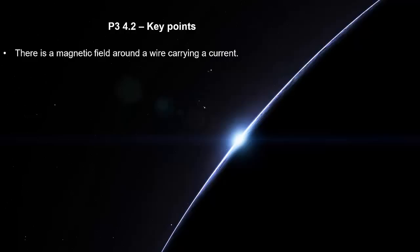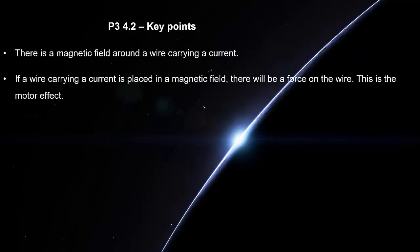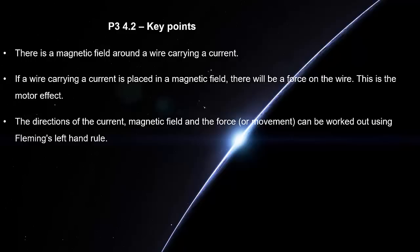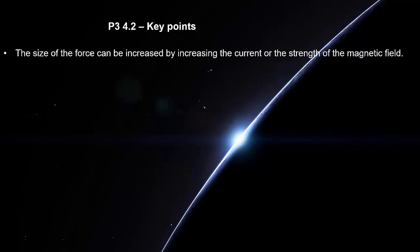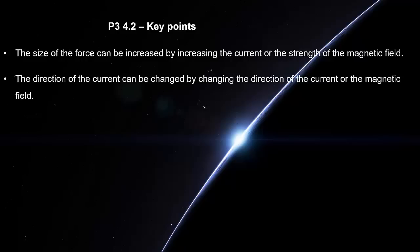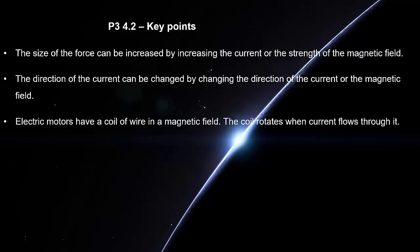There is a magnetic field around a wire carrying a current. If a wire carrying a current is placed in a magnetic field, there will be a force on the wire. This is the motor effect. The directions of the current, magnetic field and the force can be worked out using Fleming's left-hand rule. The size of the force can be increased by increasing the current or the strength of the magnetic field. The direction of the force can be changed by changing the direction of the current or the magnetic field. Electric motors have a coil of wire in a magnetic field. The coil rotates when current flows through it.